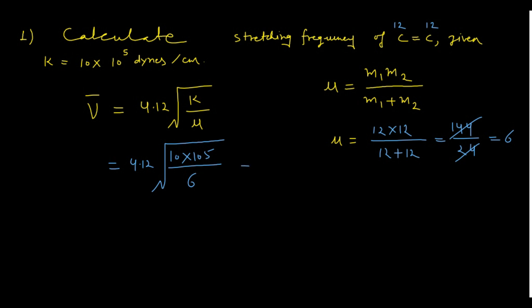Solving this gives nu-bar = 1682 cm⁻¹ for the C=C stretch. Note for biology students who may be unfamiliar with square root calculations — this step requires practice. Remember 1682 cm⁻¹ as the stretching frequency for carbon double bond carbon, as you will need this value when interpreting IR spectra.